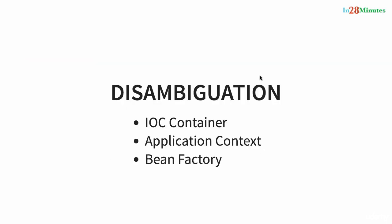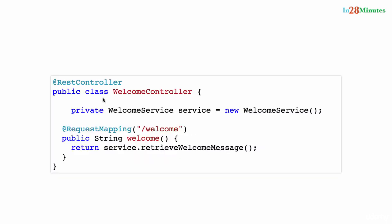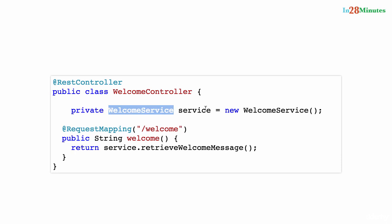Welcome back. In this step let's look at different terms which are used to refer to application context, IoC container, application context, bean factory. What is inversion of control? Typically, let's say the WelcomeController needs the WelcomeService. The WelcomeService is actually a dependency of the WelcomeController.